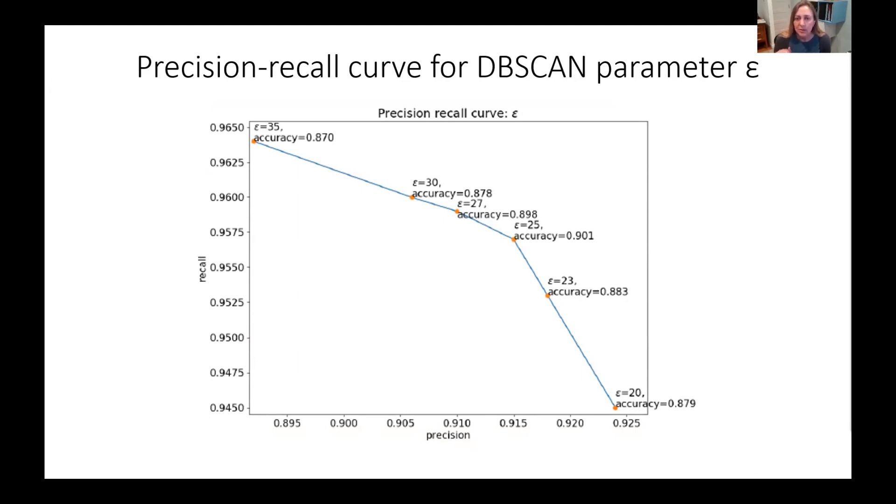We chose parameters for the DB scan algorithm based on the knee in this precision recall curve that's shown here in Figure 2, and that led to us choosing an epsilon parameter of 25.